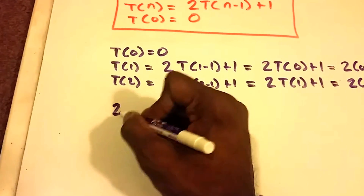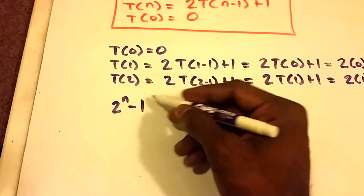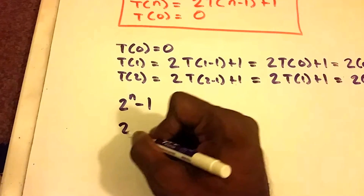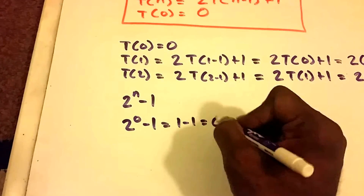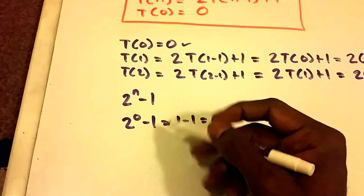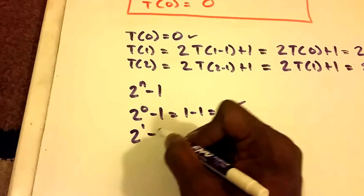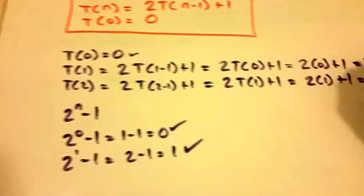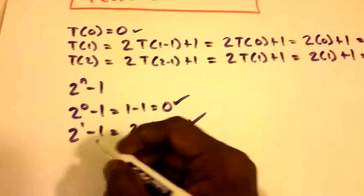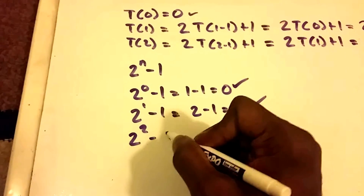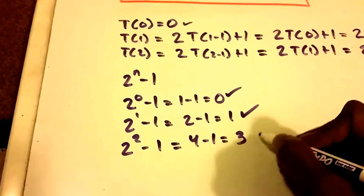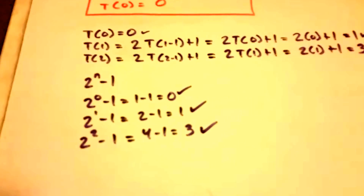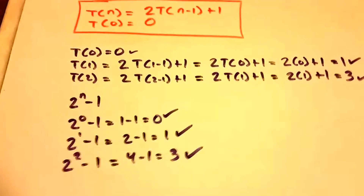Now let's cross-check with the closed form 2^n minus 1. Plugging in n equals 0: 2^0 minus 1 equals 1 minus 1 equals 0 — checks out. For n equals 1: 2^1 minus 1 equals 1 — checks out. For n equals 2: 2^2 minus 1 equals 4 minus 1 equals 3 — checks out. So it looks like this might be true.